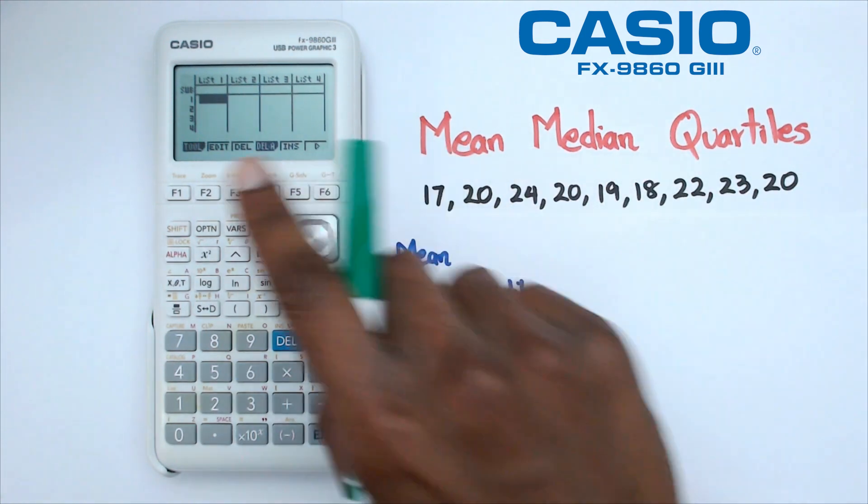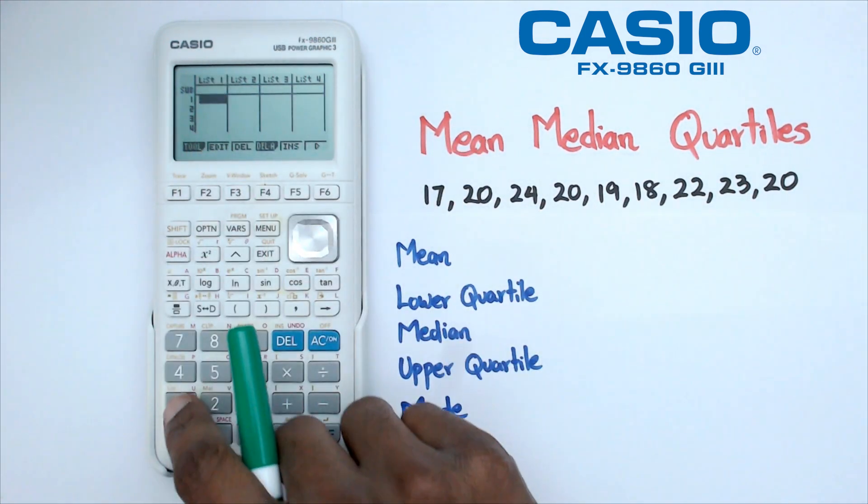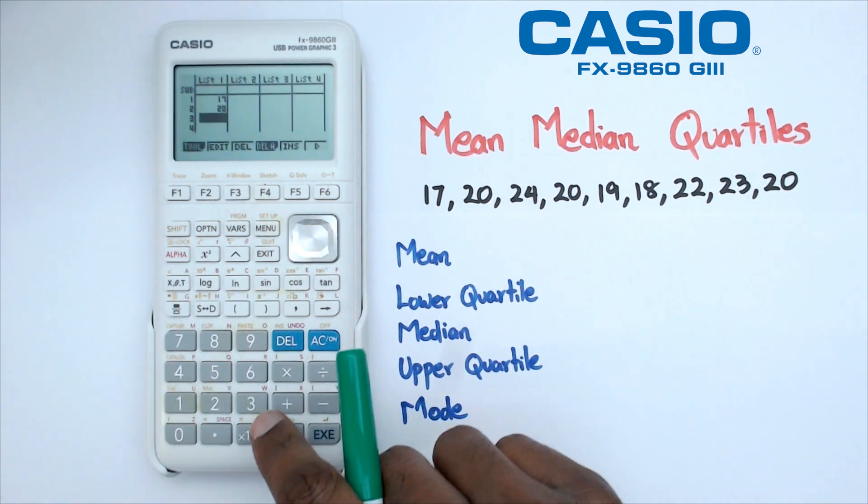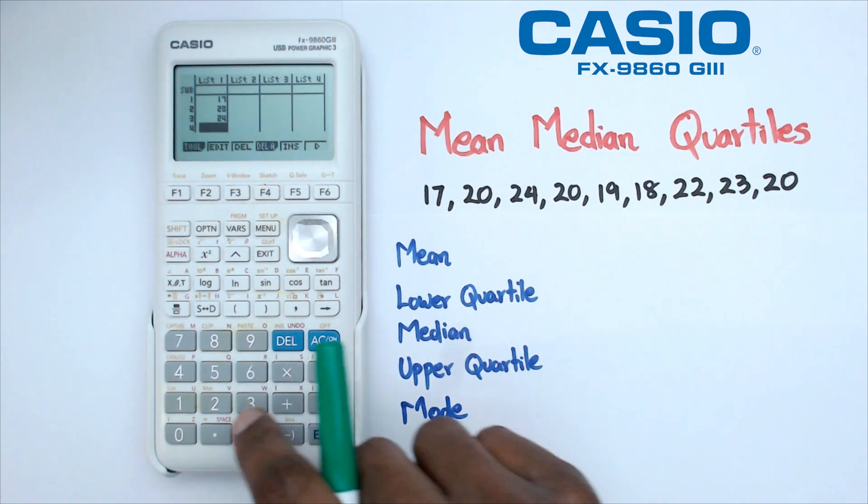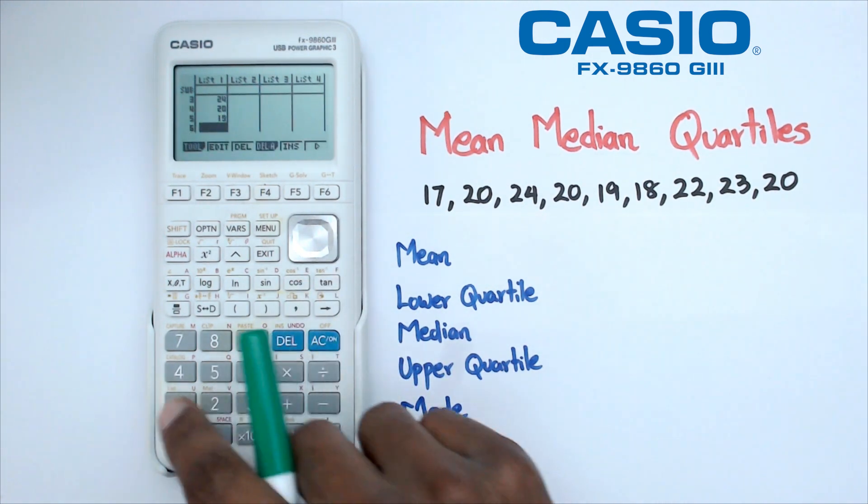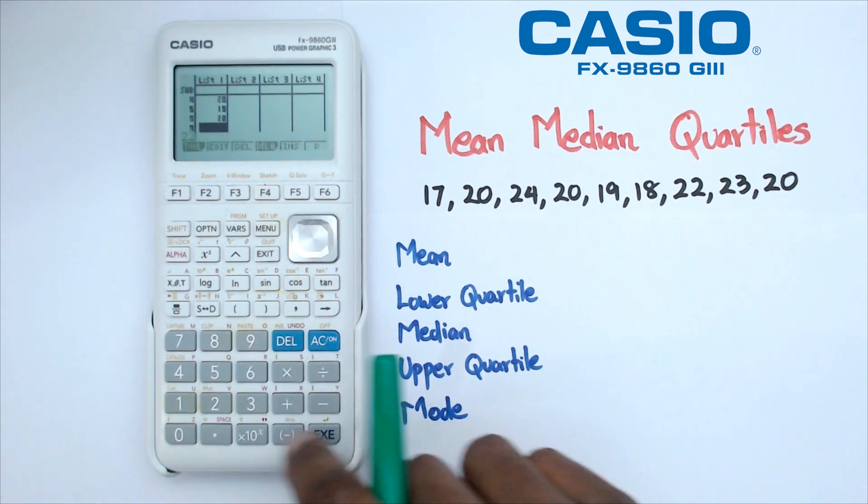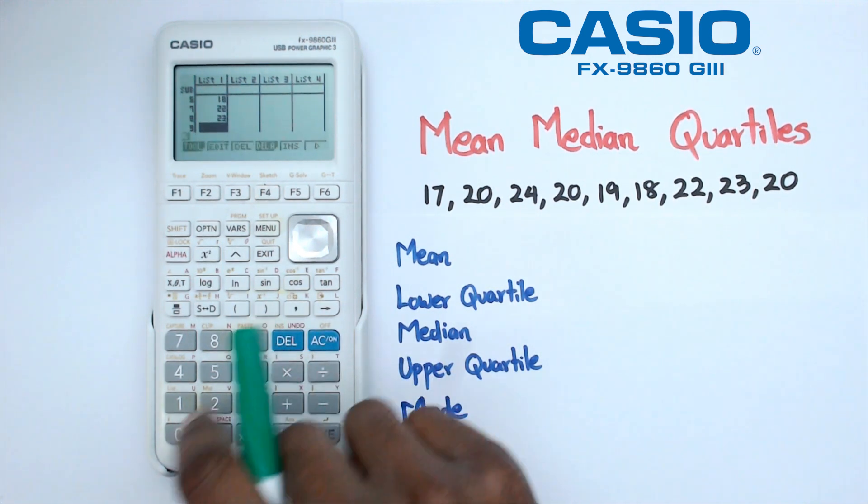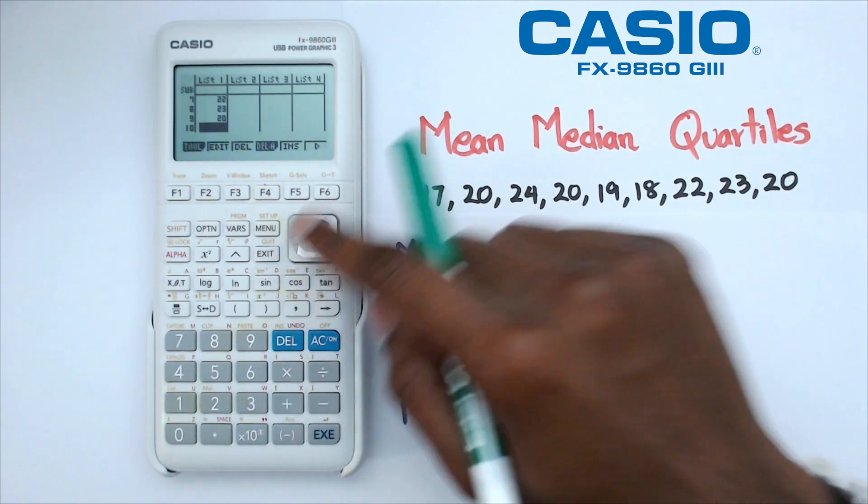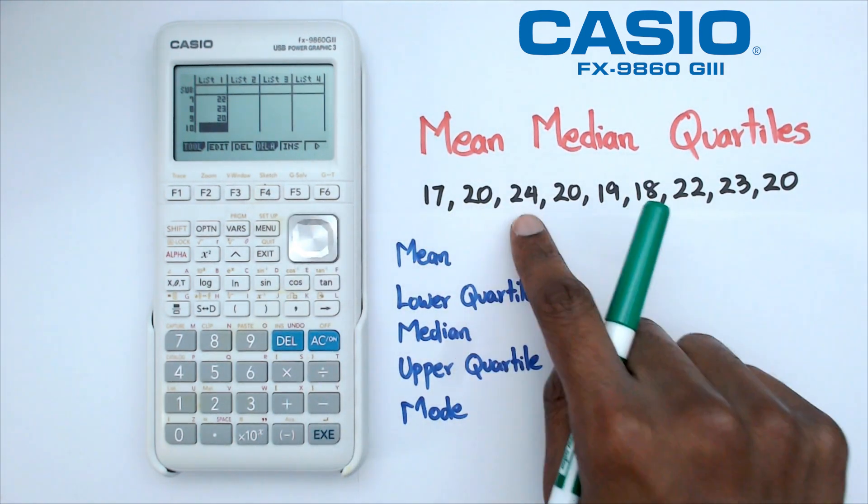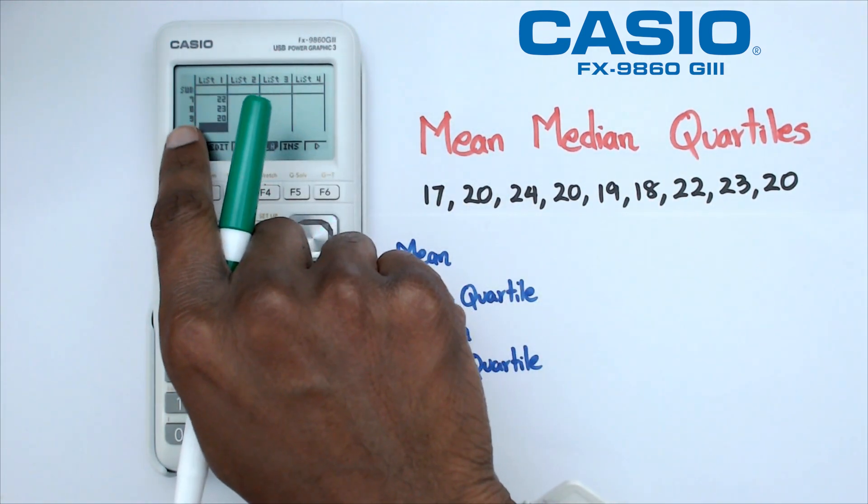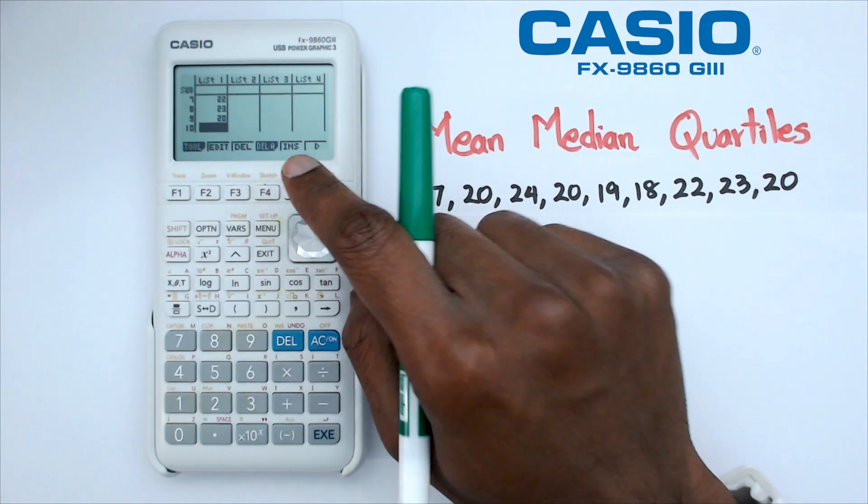The next step is to put all of these numbers into list 1. So we're going to press 17, press enter, 20, press enter, and we're going to repeat this step for all of the remaining numbers: 24, 20, 19, 18, 22, 23, and 20. Now we want to make sure that we've actually got nine numbers in here. We've got 1, 2, 3, 4, 5, 6, 7, 8, 9, and as you can see on the list we've actually done up to nine numbers, so that's really good.